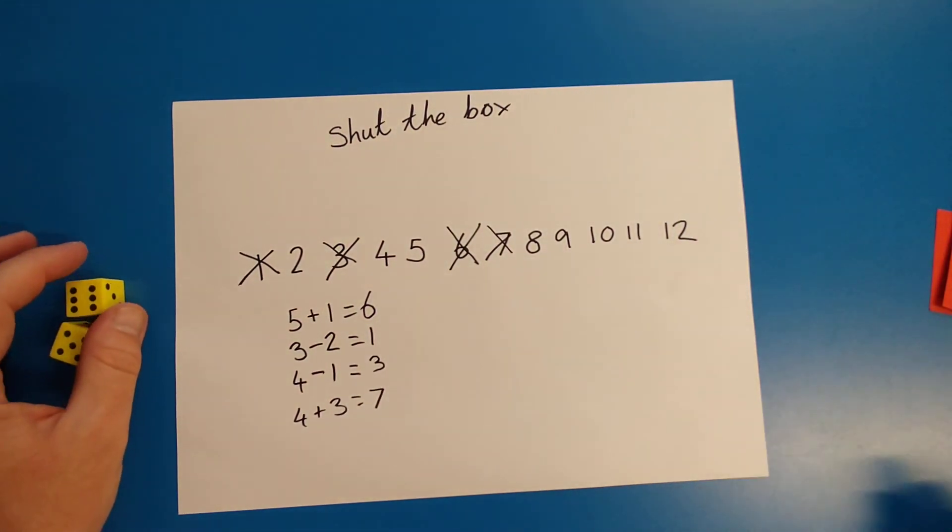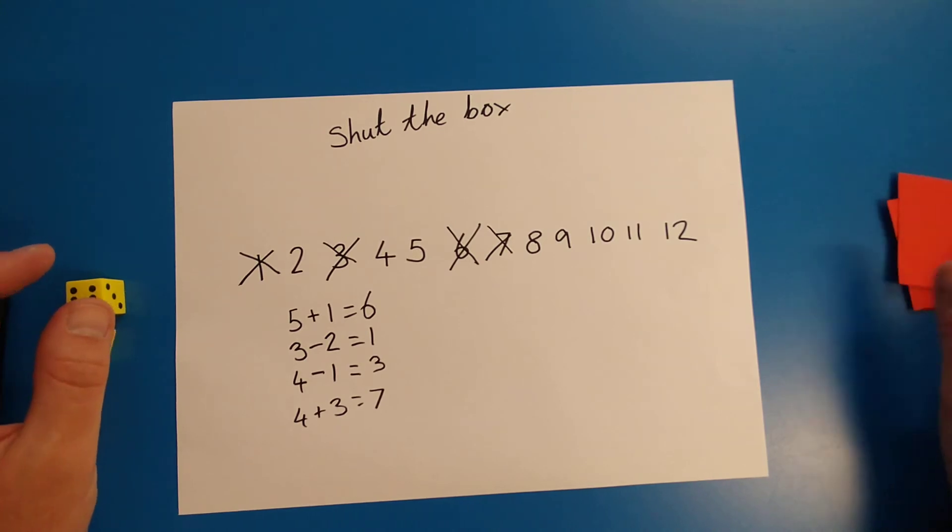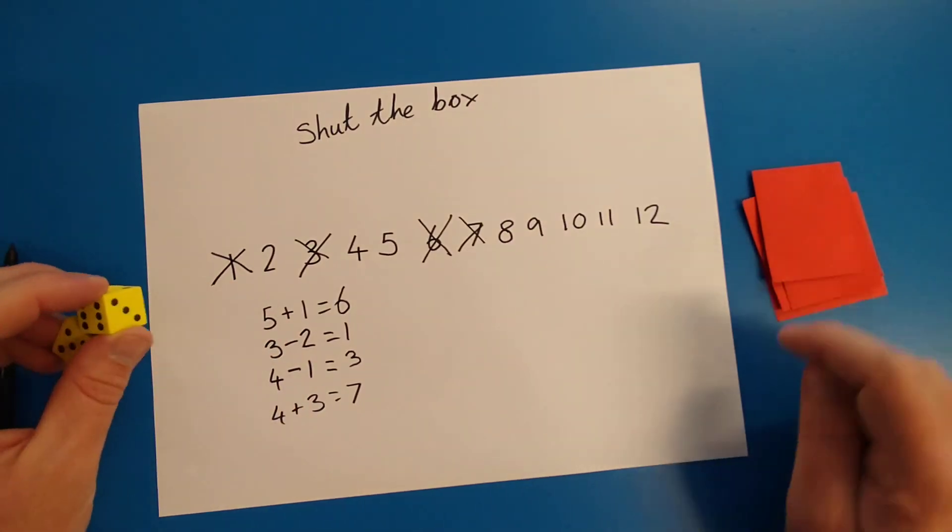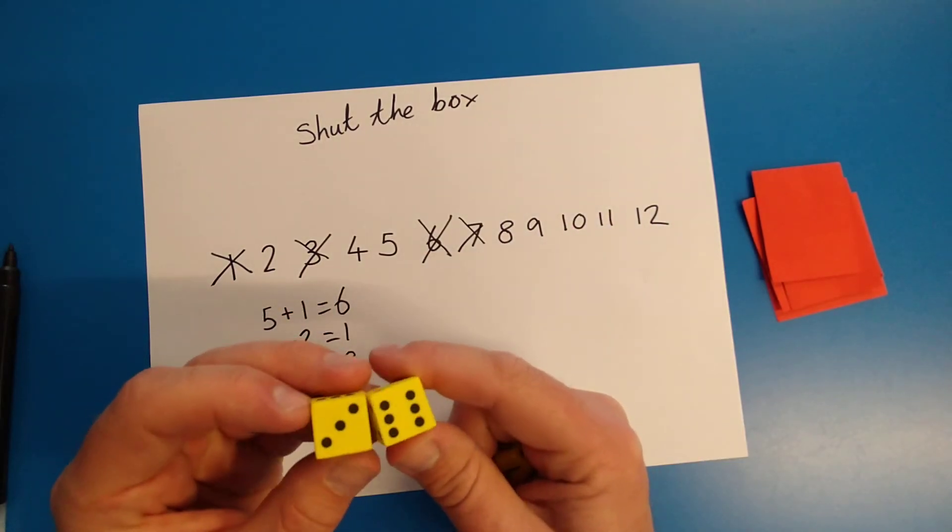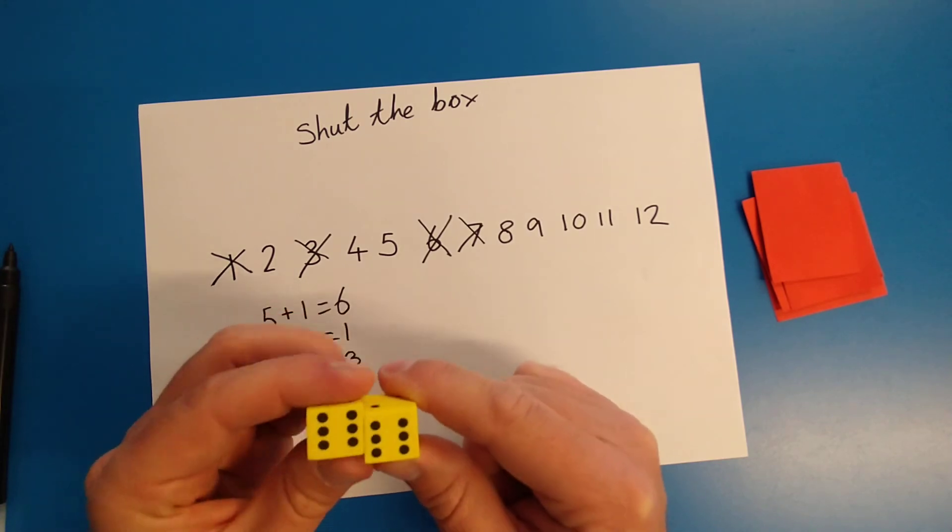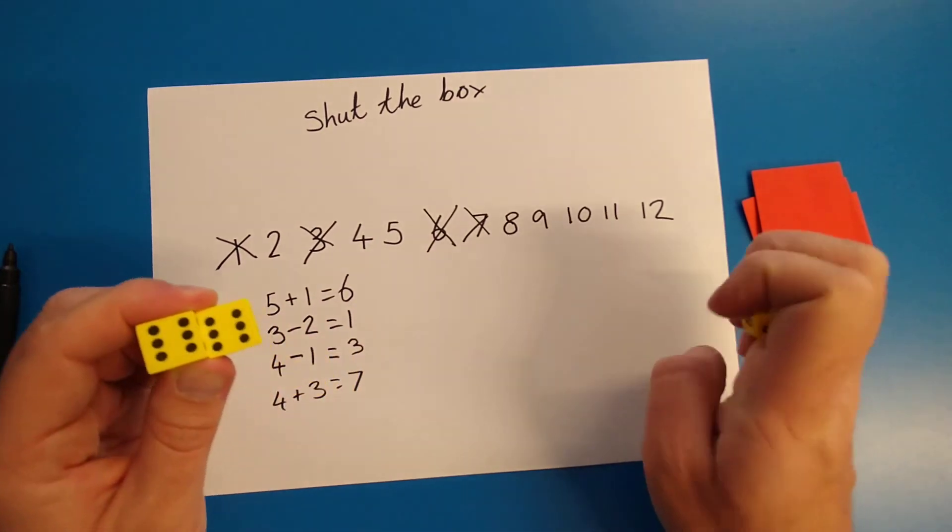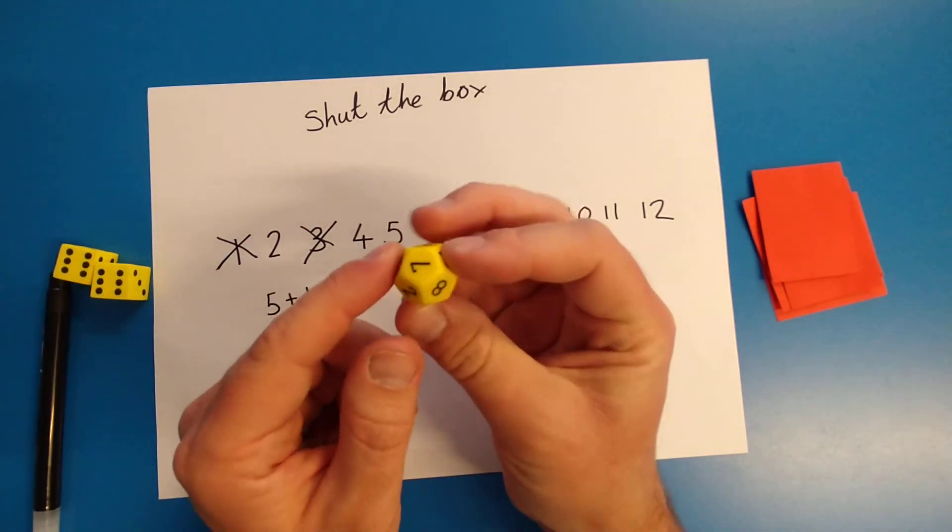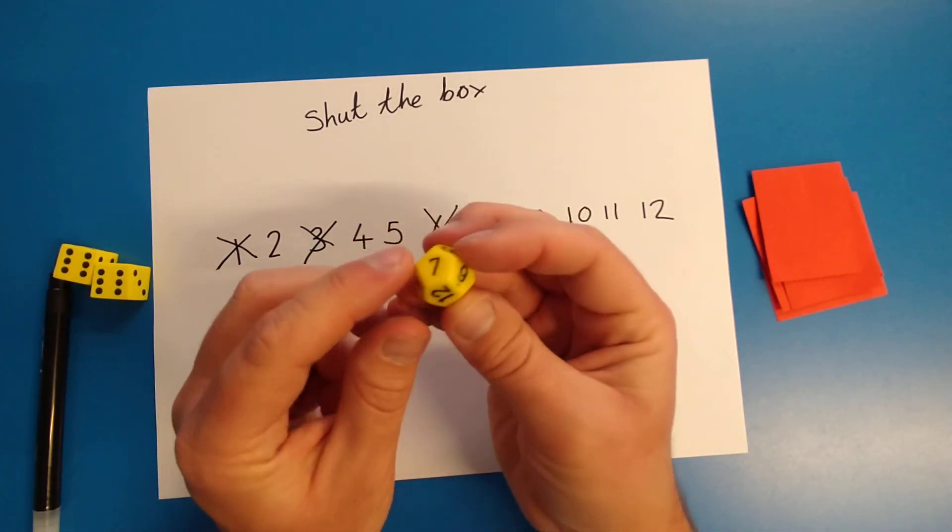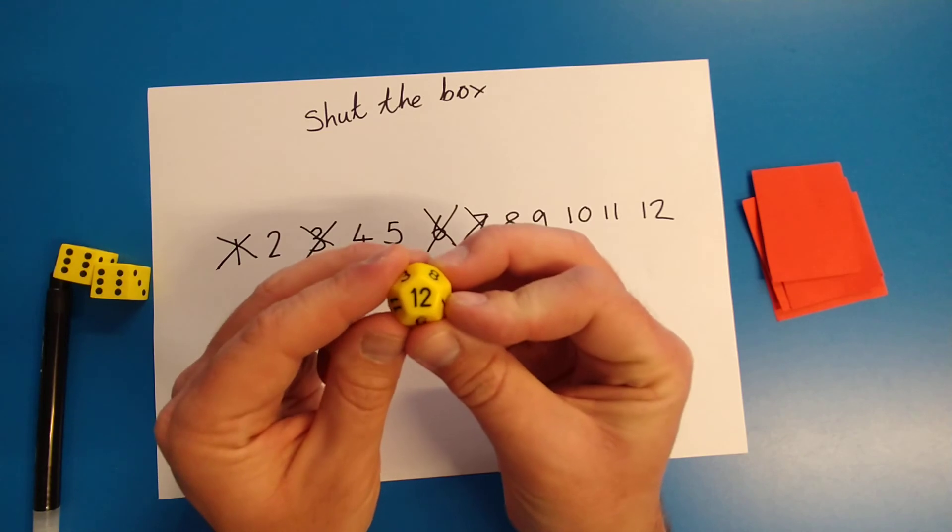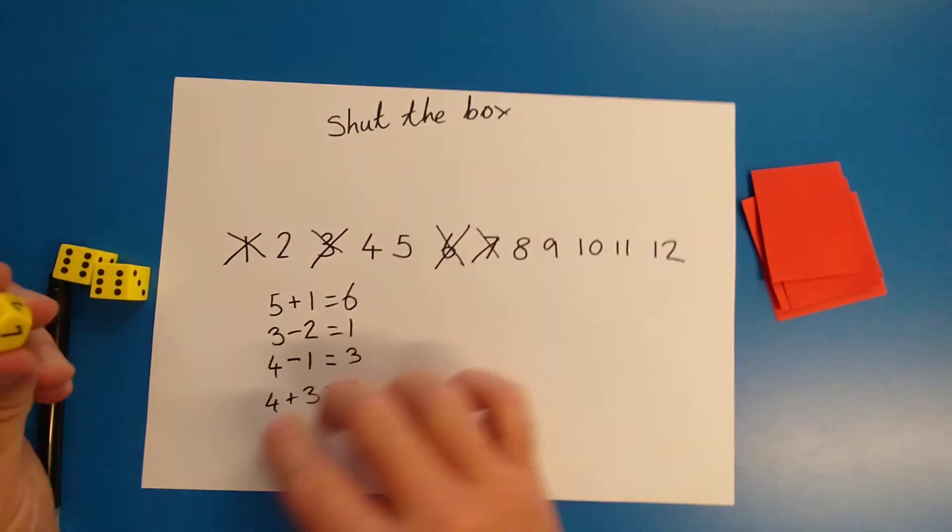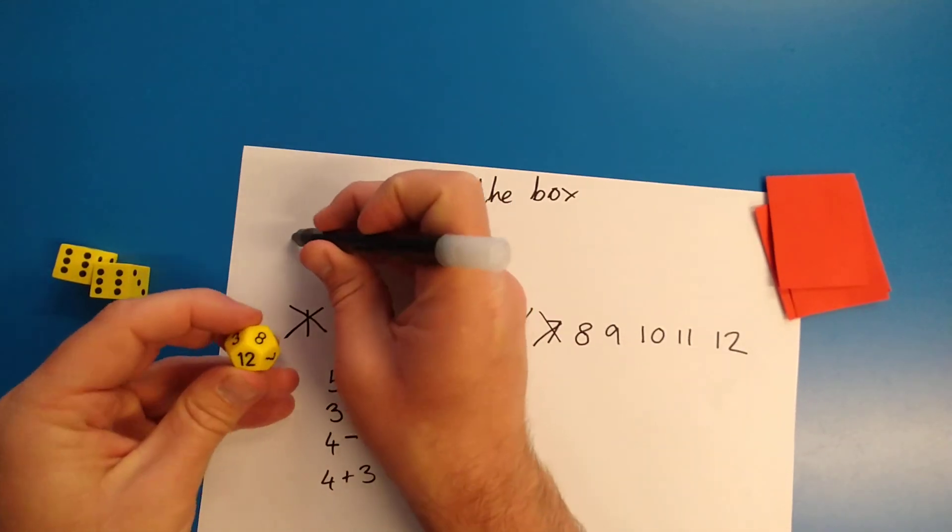So that is shut the box. If you are after a challenge, you could change the numbers. The reason mine goes up to 12 is because the biggest number on my dice are six. And six add six equals 12. But if you have a bigger dice like I do, mine goes all the way up to 12.